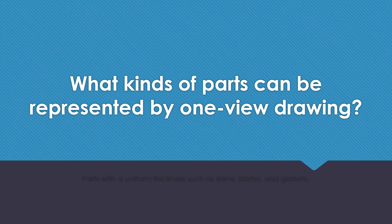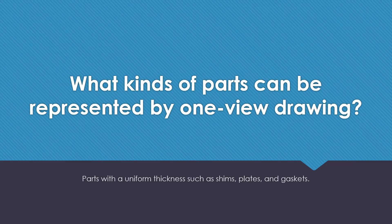What kinds of parts can be represented by one-view drawings? Parts with a uniform thickness, such as shims, plates, and gaskets.